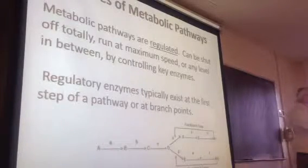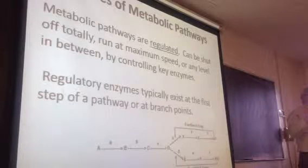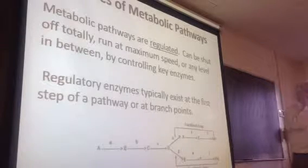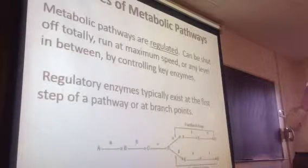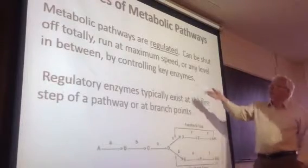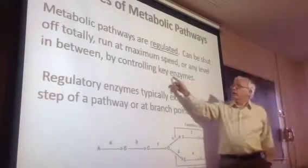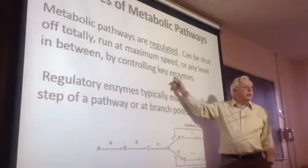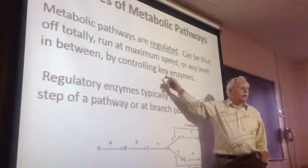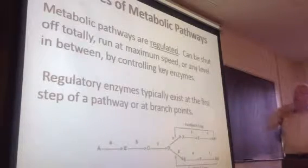So you've got all these possible ways you can move things around. They're not necessarily all active at once — it would be utter chaos if they were all active at once. You can shut some off. You can run some at part speed or full speed or anything in between, by the fact that these pathways have at least some regulatory enzymes in them. And you can control the flux through the pathway by upregulating or downregulating those enzymes.